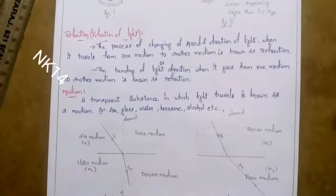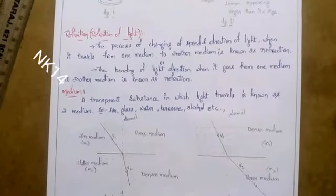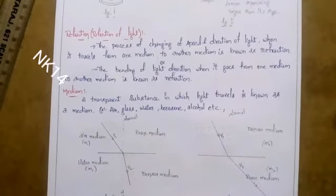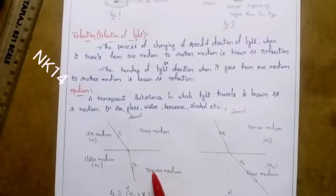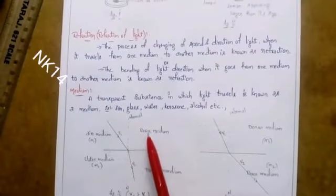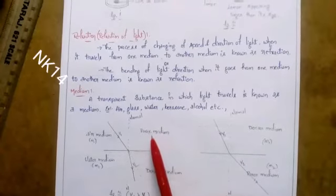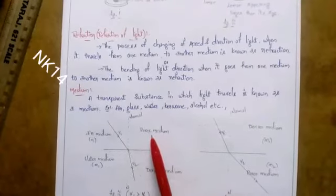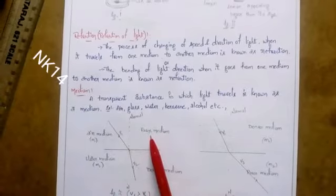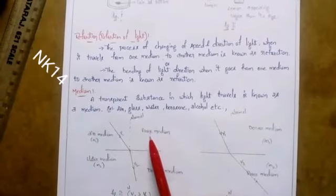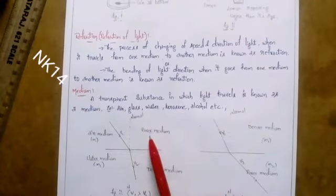Examples of medium are air, glass, water, kerosene, and alcohol. Now I have taken two mediums: rarer medium and denser medium. Rarer medium means the particles are far away from each other.